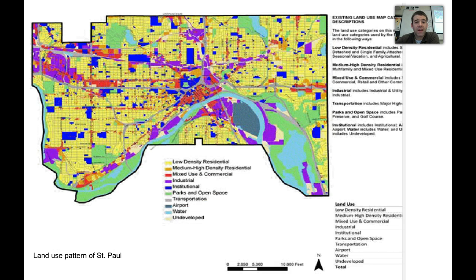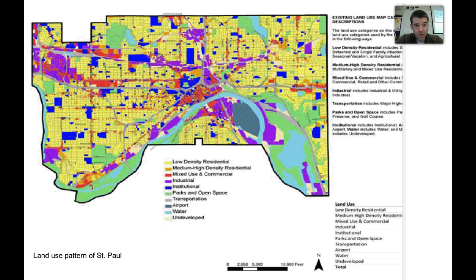Looking at St. Paul again for the multiple nuclei model — along Grand Avenue, which leads into St. Paul, you see more business-oriented development. The downtown core or CBD of St. Paul is visible, and just across the river you see areas of industry due to transportation accessibility. Moving to the western part of St. Paul, along major freeway routes and highway transportation arteries, the type of services and land use is very different.